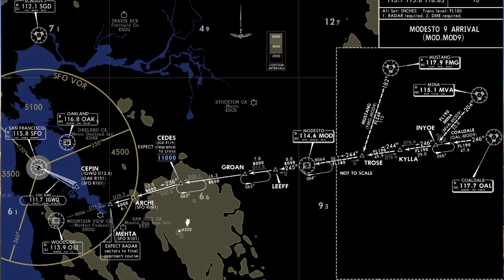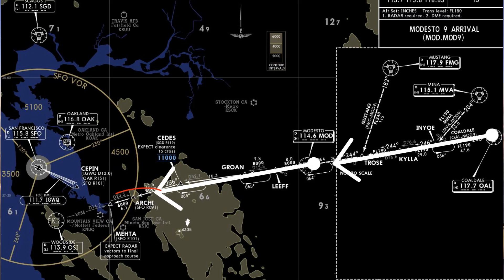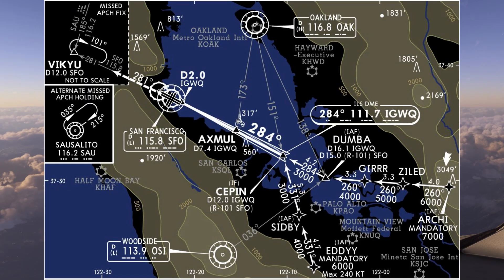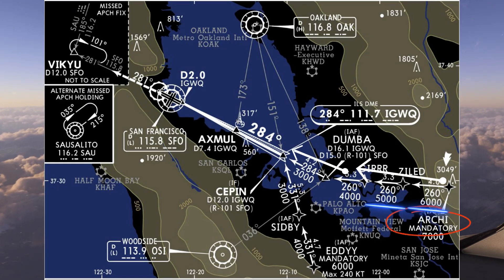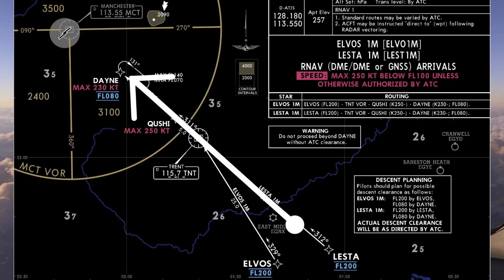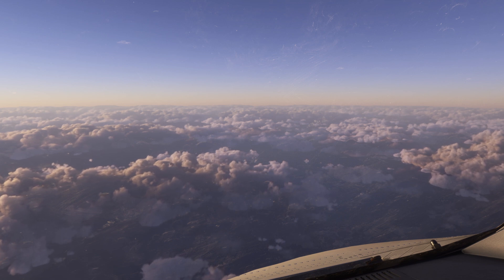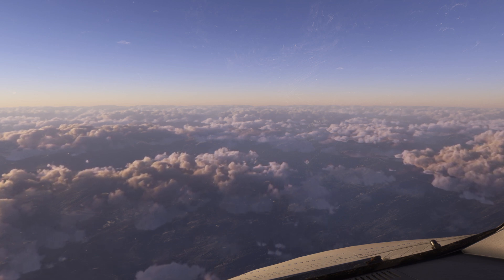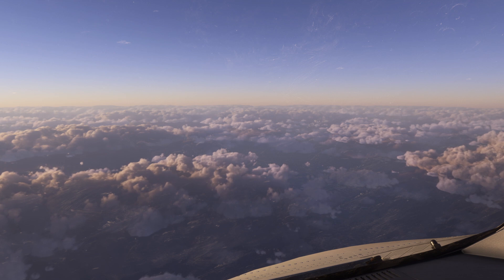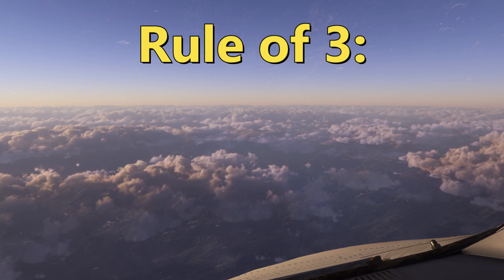In many parts of the world, particularly the USA, this works perfectly because the standard arrival routes are designed to deliver you right onto the ILS intercept point. But what if we are on an approach where the STAR doesn't actually take you to the ILS intercept point? Here in the UK, that is pretty much every approach at every airport, because air traffic control have to give us ILS vectors - no STAR links up with the final approach fix. So in cases like this, how can we as pilots have our aircraft at the right altitude at the right time for the glide slope intercept?